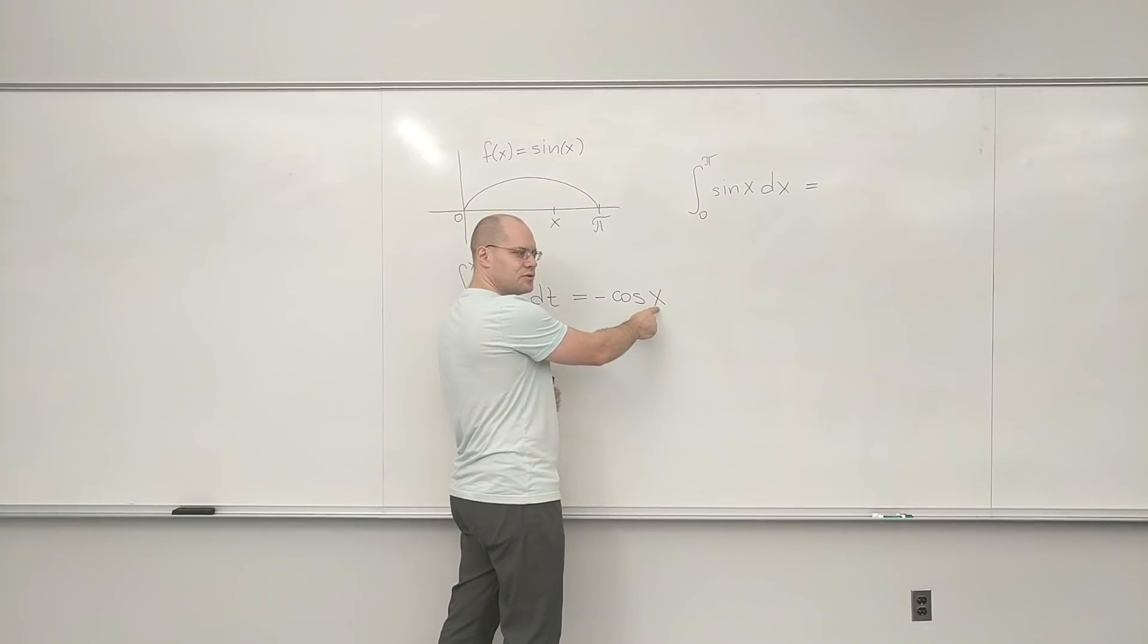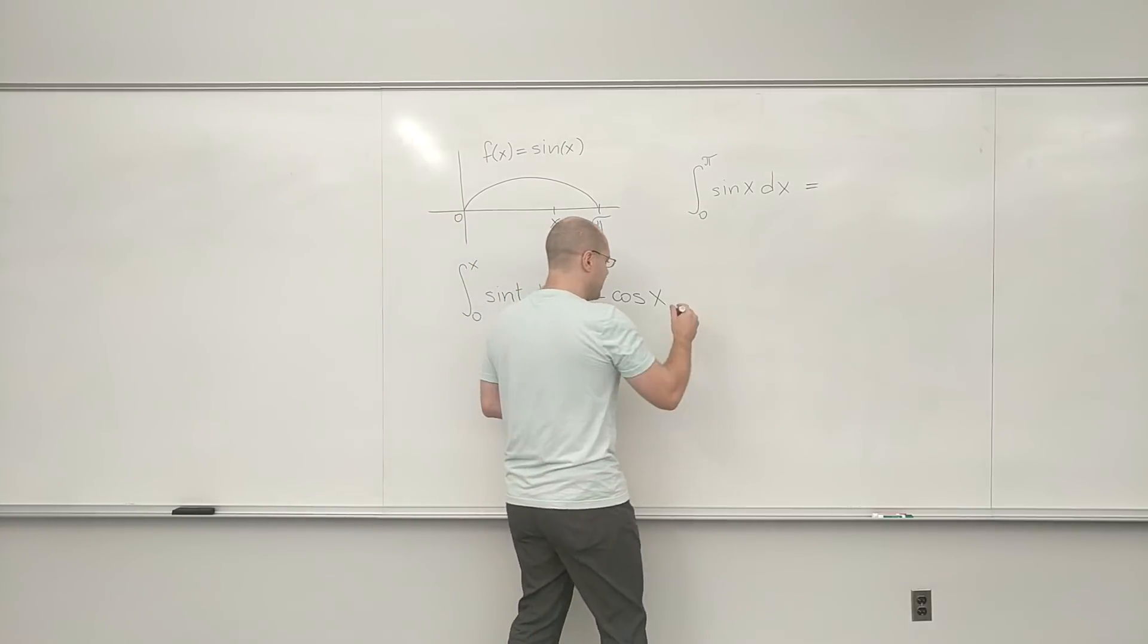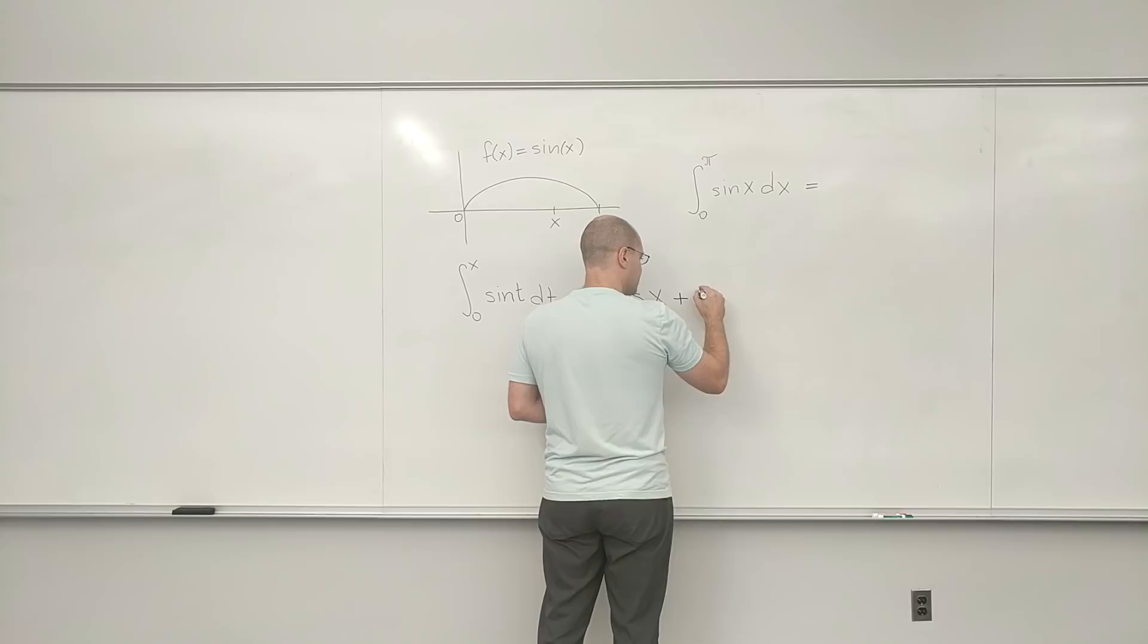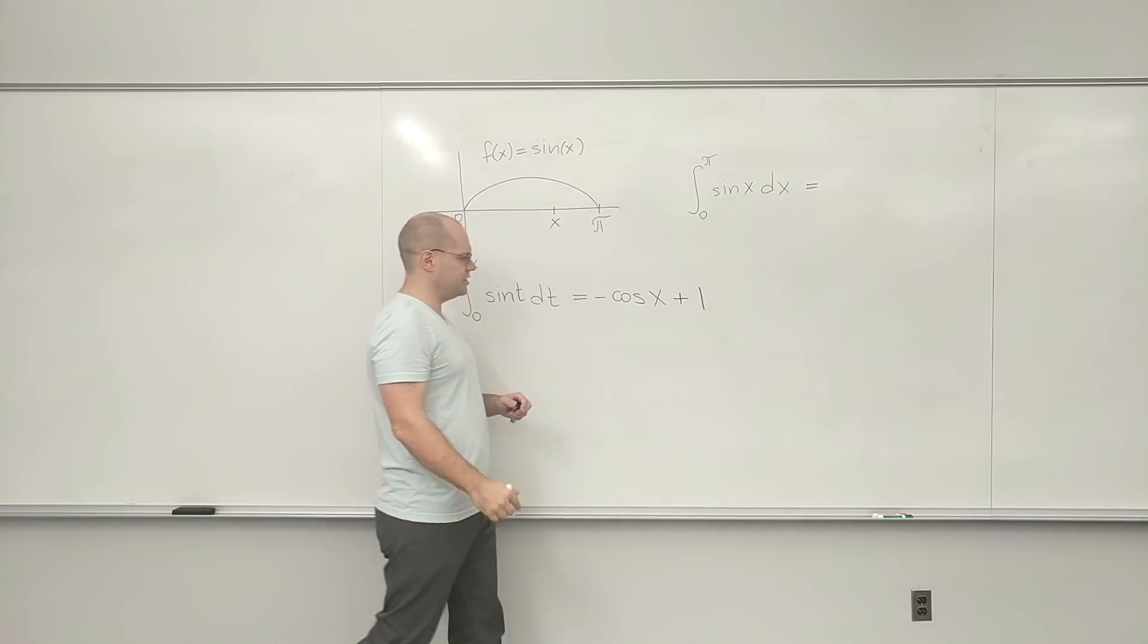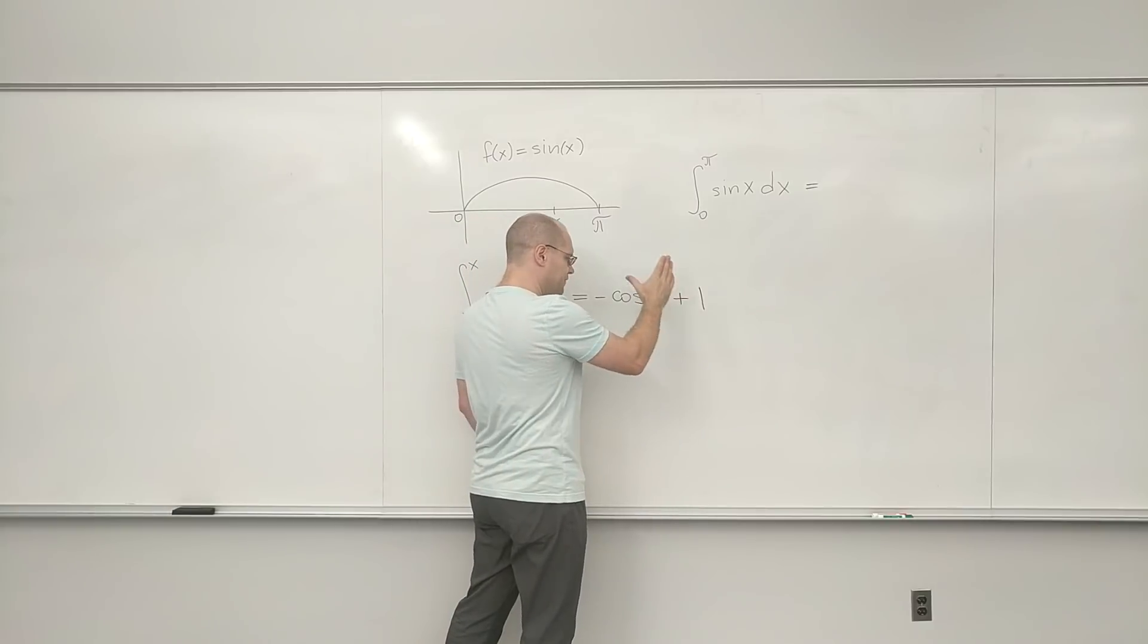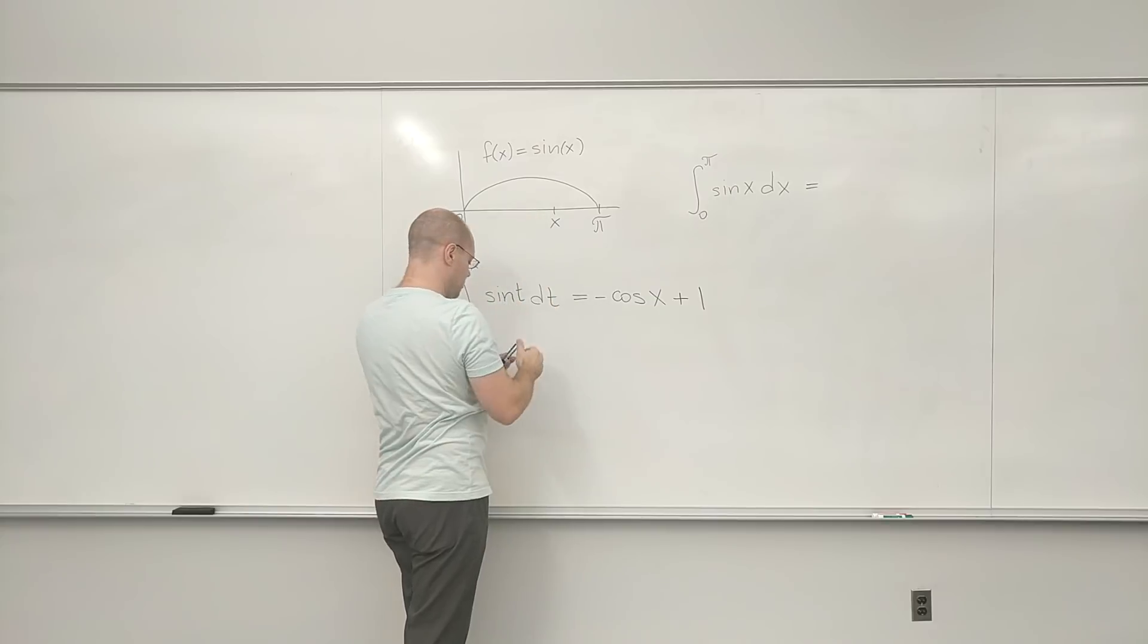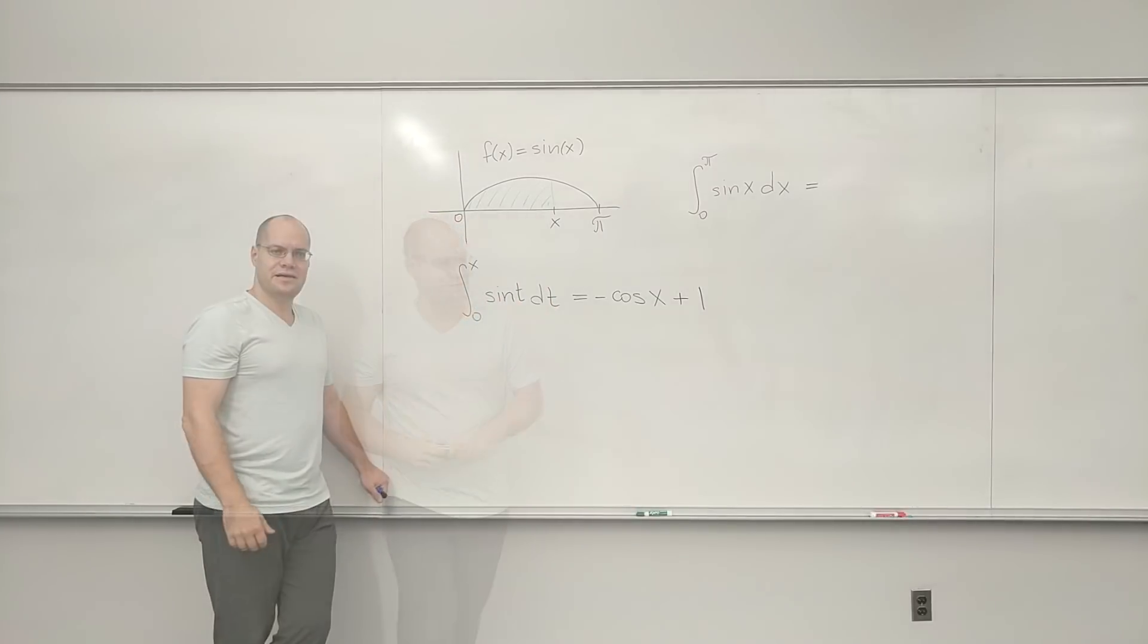So at zero, this is minus one. So if we want it to work, we have to add one, plus one. Great. And now we have found the function that describes the area under this graph between zero and x.